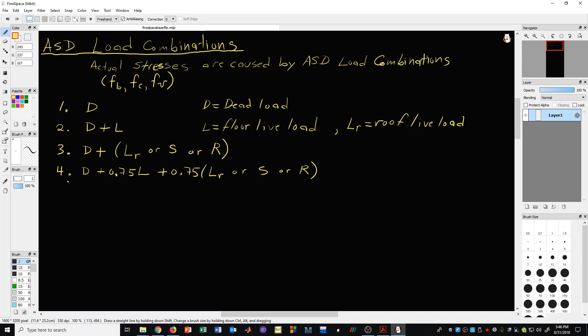Let's now look at load combination number 5. In this case, we have dead plus 0.6 wind or 0.7 earthquake. And here, just like we sometimes have roof live or snow, here the stipulation is that we have wind or earthquake, but we do not apply them simultaneously.